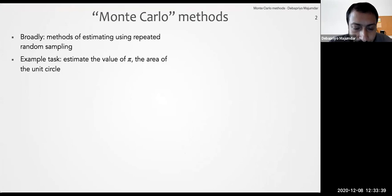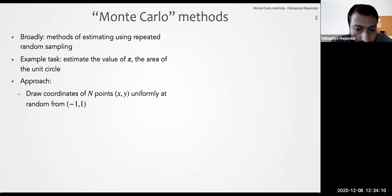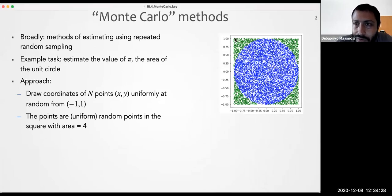Suppose we don't know the value of pi and we want to estimate it. The value of pi is essentially the area of the unit circle. What we will do is draw coordinates uniformly at random, where each coordinate x and y is between minus one and one. So the points will be uniform random points in the square with area equal to four — basically all these green and blue points.